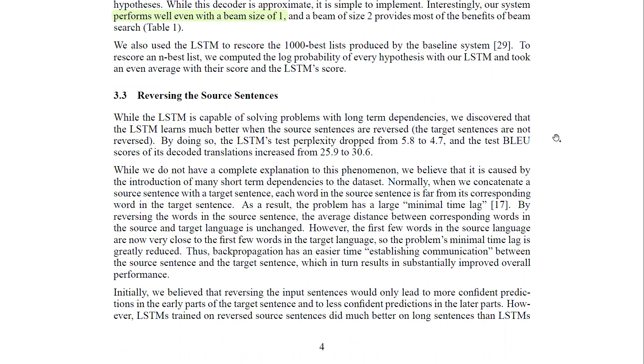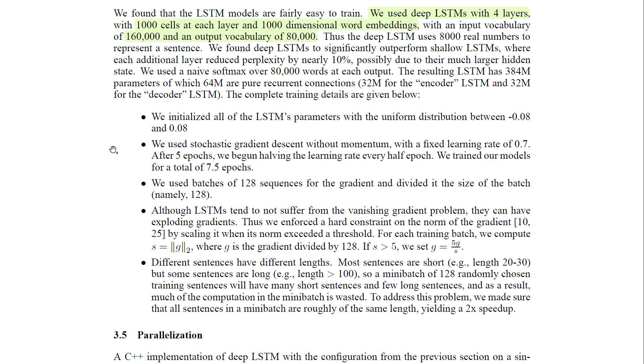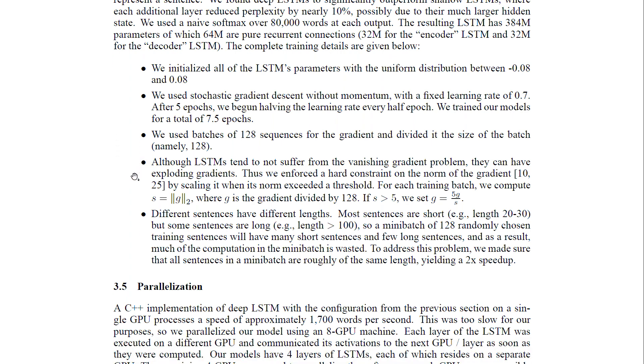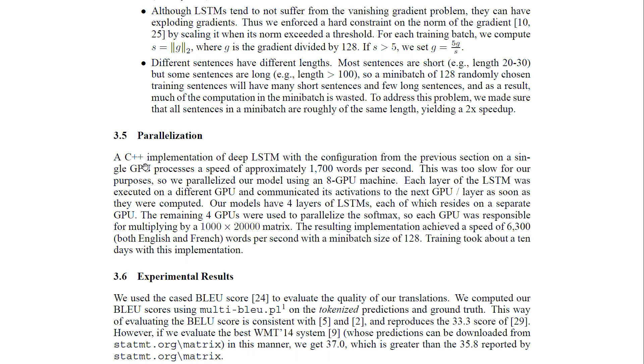And then they talk more about the reversing of the source sentence and some training details in that they used LSTM with four layers, thousand cells, each layer, and a thousand dimensional word embedding, which is quite large, I think. And then they also used an input vocabulary of 160,000 and output of 8,000. And then they also have some how they initialize the parameters, what the optimization they use, which they used SGD without momentum. And then they use a gradient clipping. And they also try to avoid unnecessary padding, they try to match sentences in a batch that were of equal length. And that yielded some speed up and then some parallelization. They're doing a C++ implementation. This was before PyTorch and TensorFlow.